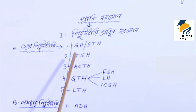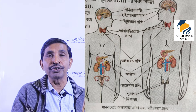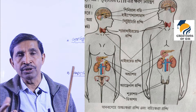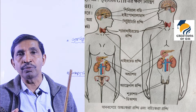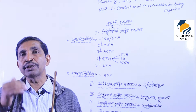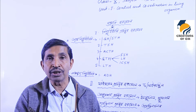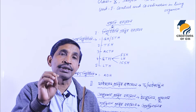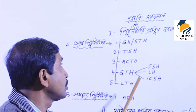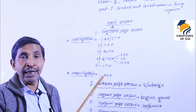First, there is GH — growth hormone. The growth hormone is also called STH — somatotrophic hormone — the growth hormone. It controls growth and development of the body.